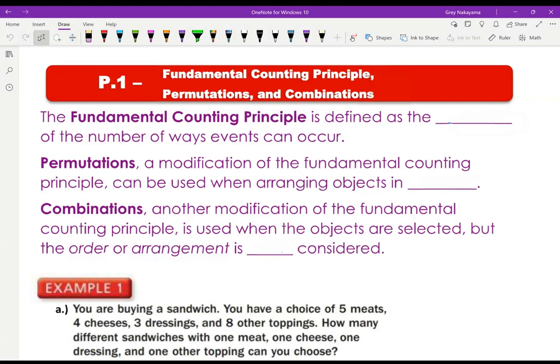Our Fundamental Counting Principle is defined as the product of the number of ways events can occur. To give you a quick example of that, if you have three pairs of pants in your closet and you have five shirts, then you have 3 × 5 different outfits. Three pairs of pants, five shirts, 15 different outfits. And you can extend that for as many different options. If I've got four pairs of shoes, then I would multiply by four, and so forth.